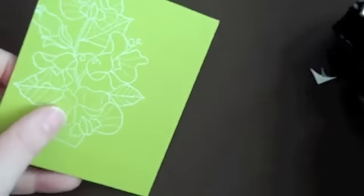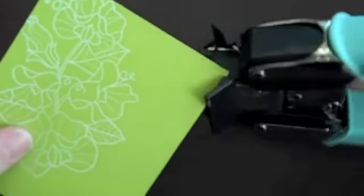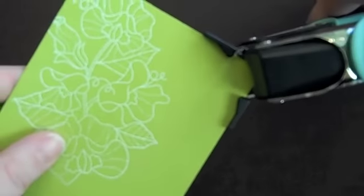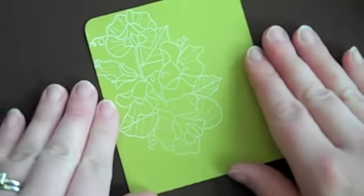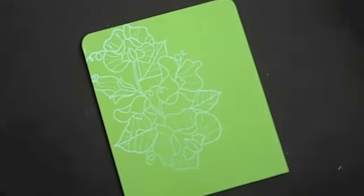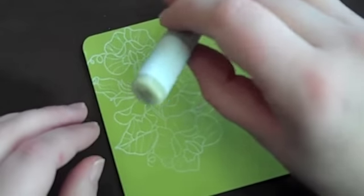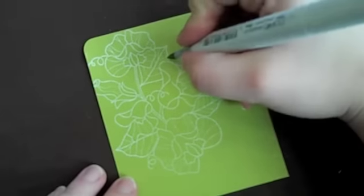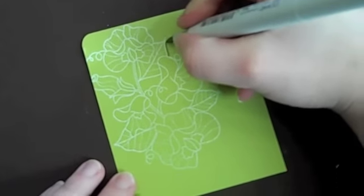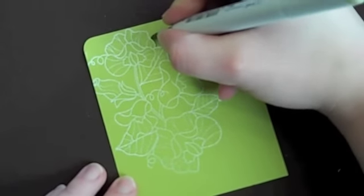I'm using the Corner Chomper to round just the top two corners of my card cover, and then I'm taking a Copic marker and I'm adding just a little bit of an outline around the edge of the image.